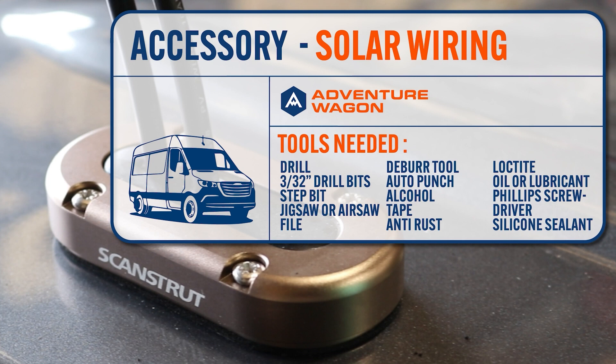You'll also need a punch for marking pilot holes, Phillips head screwdriver, isopropyl alcohol, paper towels, a sharpie, some painters tape, rust preventative, Loctite, and silicone or some other type of sprayed lubricant for passing the wires through the gland.